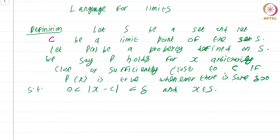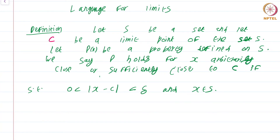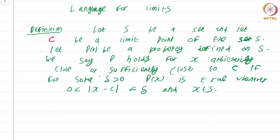To be 100 percent precise, let me reorder this so that things become clearer. If for some delta greater than 0, p(x) is true whenever 0 < |x − c| < delta and x is in S. What this is saying is you can make the property p true if you can find some delta such that p(x) is true whenever x is sufficiently close to c and x is coming from S. We do not allow x equal to c simply because c may not even be in the set, and the way we write this is analogous to the way we define a limit.